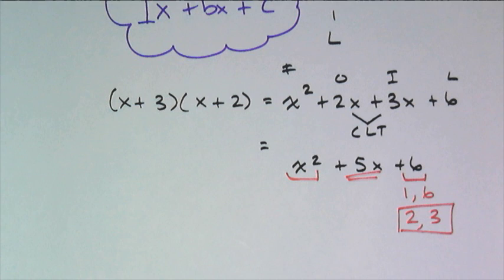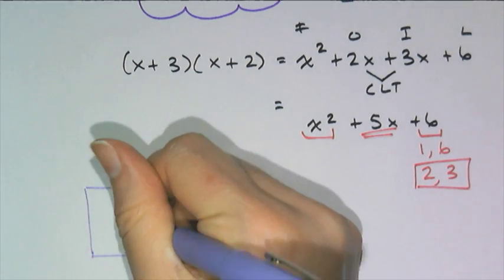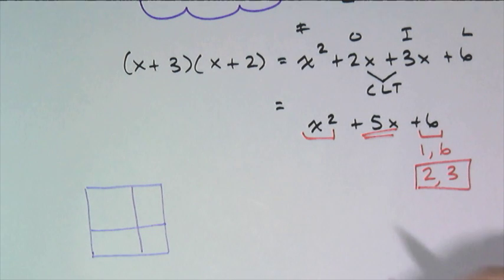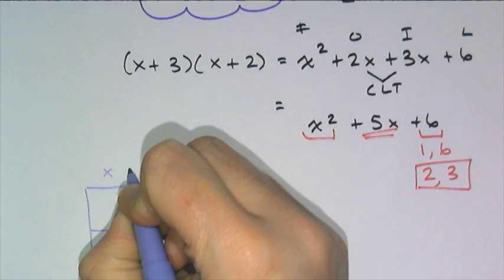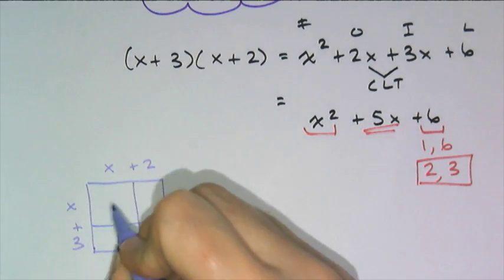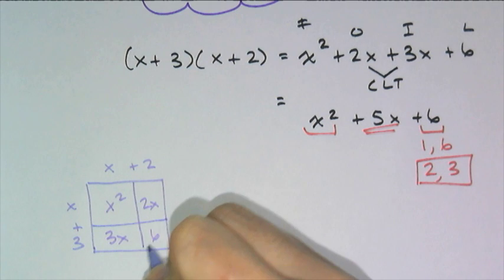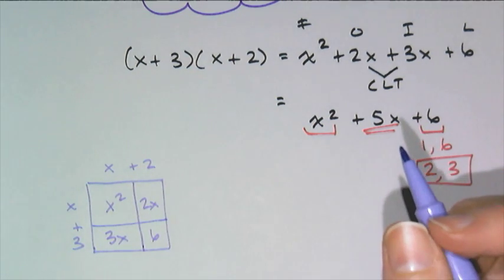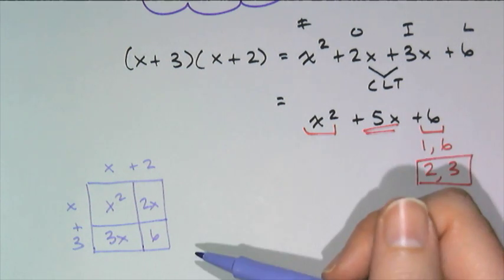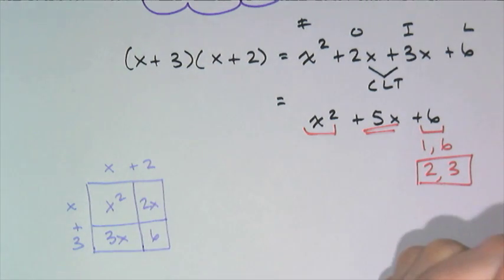Now of course there's more to factoring than just sort of logicking your way through it. There are techniques to help you figure out what these are. And one technique is to draw these little rectangles for multiplication. So if I have x plus 2 and x plus 3, x times x is x squared, x times 2 is 2x, 3x, and then 6. And so if I think of my quadratic trinomial as being very Punnett square-like, and getting me a 2 by 2 little rectangle.